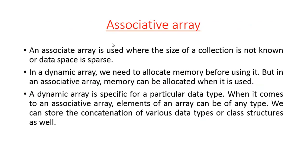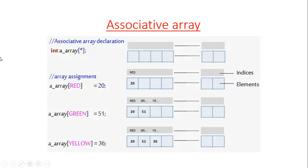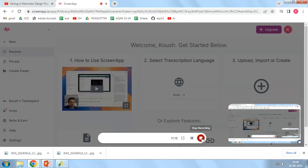Then we have the associative array. Associative arrays are used where the size of a collection is not known. In a dynamic array you must allocate memory before using it, but in an associative array memory is allocated only when it is used. An associative array can be used for any data type. For example, the first element is 20 with index 'red', the second is 51 with index 'green', and the third is 36 with index 'yellow' — showing that strings can be used as indices. Hopefully this video was useful.